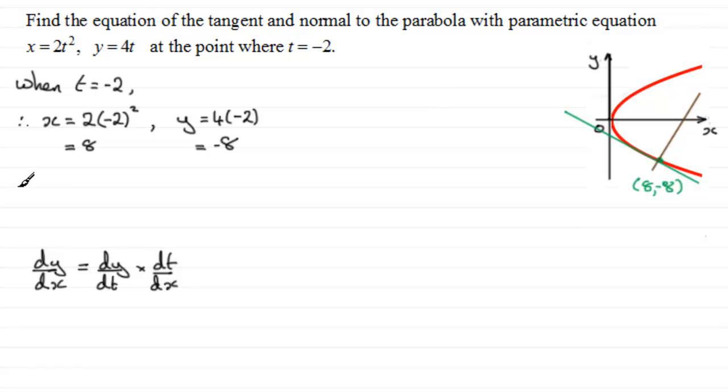So we need dy by dt to do this. If we come up here, therefore dy by dt, what's that going to equal? Well, if we differentiate y with respect to t, we're just going to get 4. And we also need dt by dx, but we can get dx by dt and then invert it. So dx by dt, if we differentiate it, is going to be 4t.